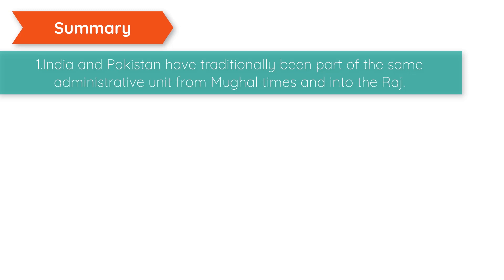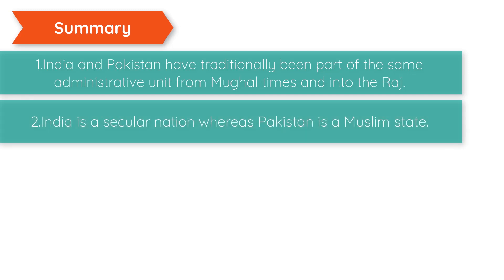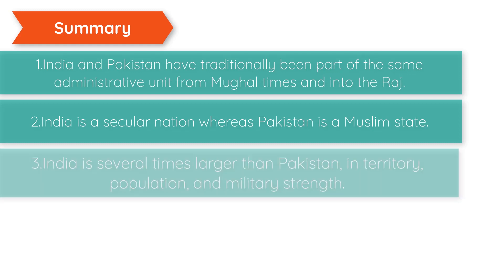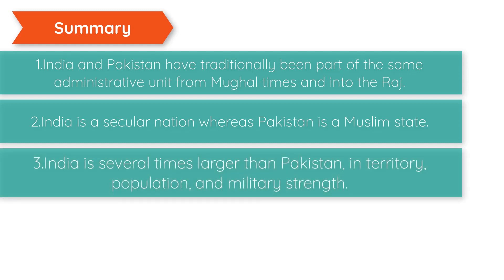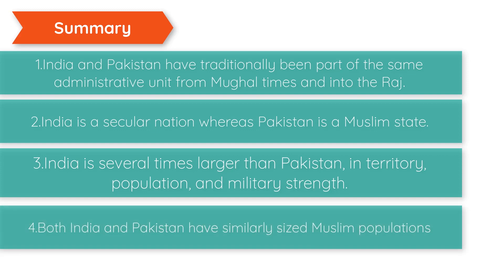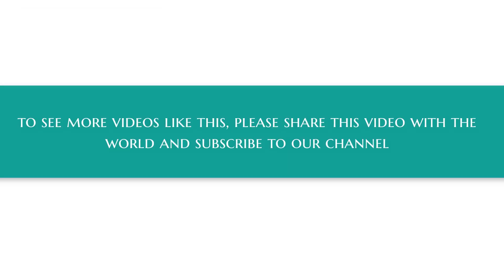In summary: One, India and Pakistan have traditionally been part of the same administrative unit from Mughal times and into the Raj. Two, India is a secular nation whereas Pakistan is a Muslim state. Three, India is several times larger than Pakistan in territory, population, and military strength. Four, both India and Pakistan have similarly sized Muslim populations.